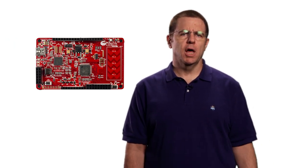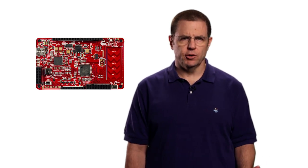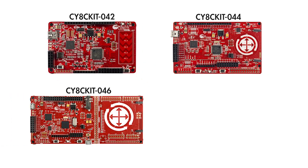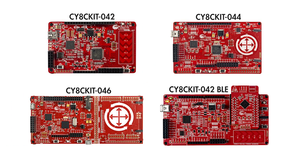Most of the lessons are short, so you will learn a lot very quickly. All of these lessons use a pioneer kit, which you can purchase from the Cypress online store or from our excellent distribution partner Future. There are actually four pioneer kits that you can use: the CY8C kit 042, the 044, the 046, and the 042 BLE.